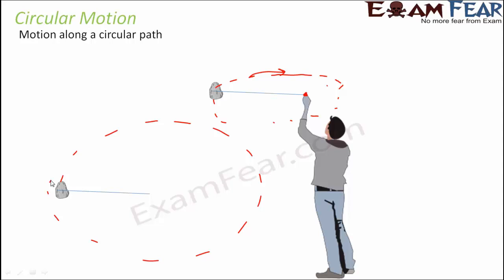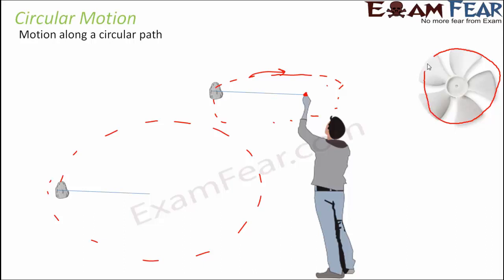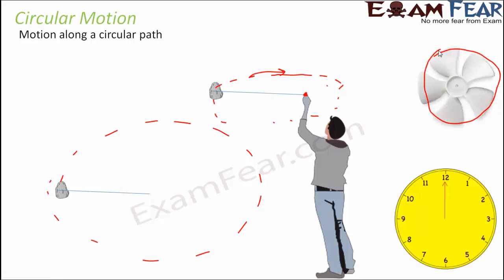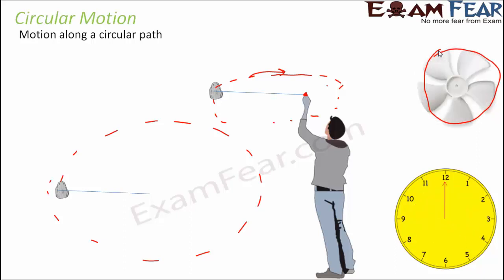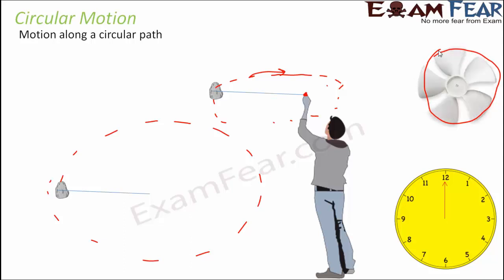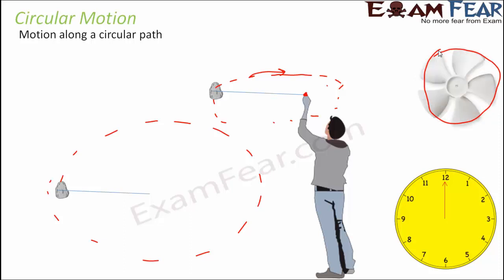Examples of circular motion from everyday life include the movement of the blades of a fan, which move in a circular path, and the hands of a clock, which also move in a circular path. There are many objects around us that show circular motion. You don't need to search textbooks — just observe things around you and you will find objects in both rectilinear and circular motion.